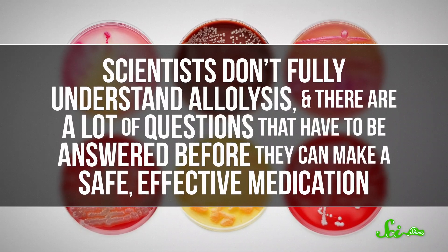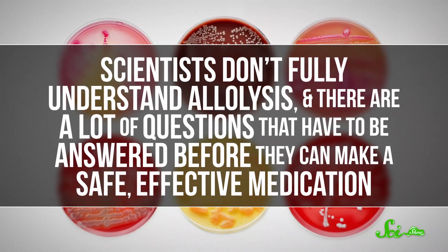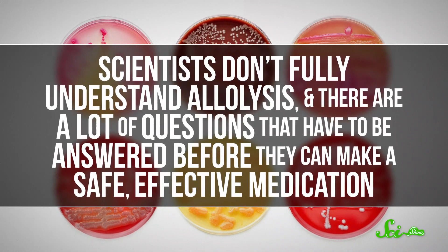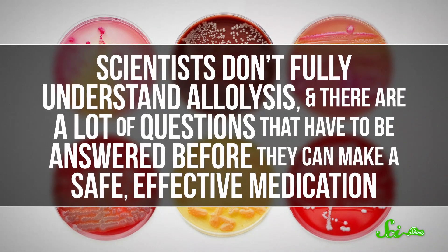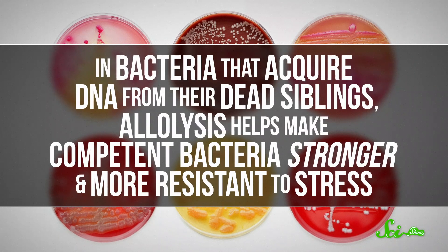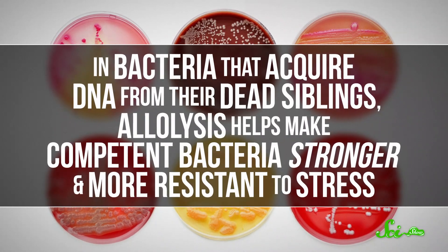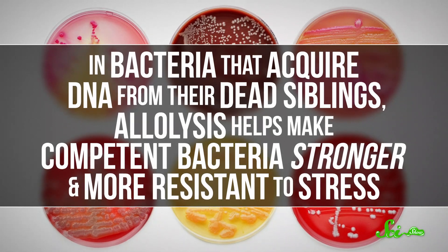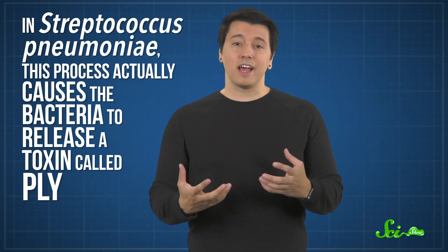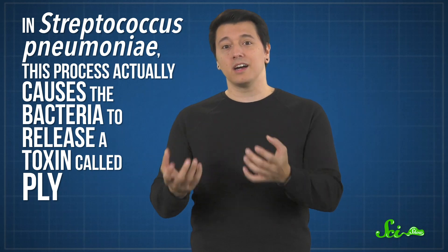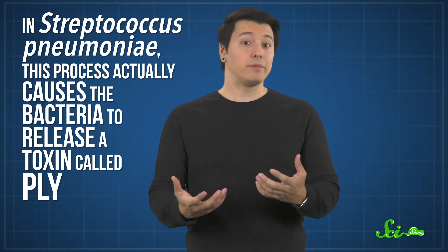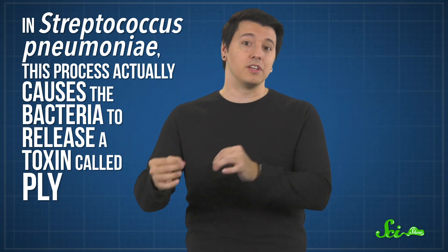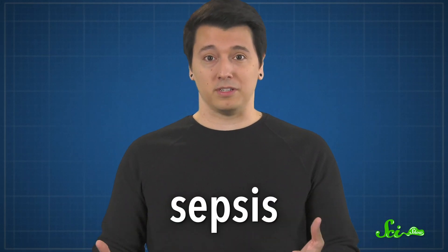For one, scientists don't fully understand allolysis, and there are a lot of questions that have to be answered before they can make a safe, effective medication. For example, in bacteria that acquire DNA from their dead siblings, allolysis helps make competent bacteria stronger and more resistant to stress. And in S. pneumoniae, this process actually causes the bacteria to release a toxin called ply, which damages the delicate cells that line the lungs and transport oxygen into the blood. This lets the bacteria invade the bloodstream, which can ultimately cause a fatal infection called sepsis.